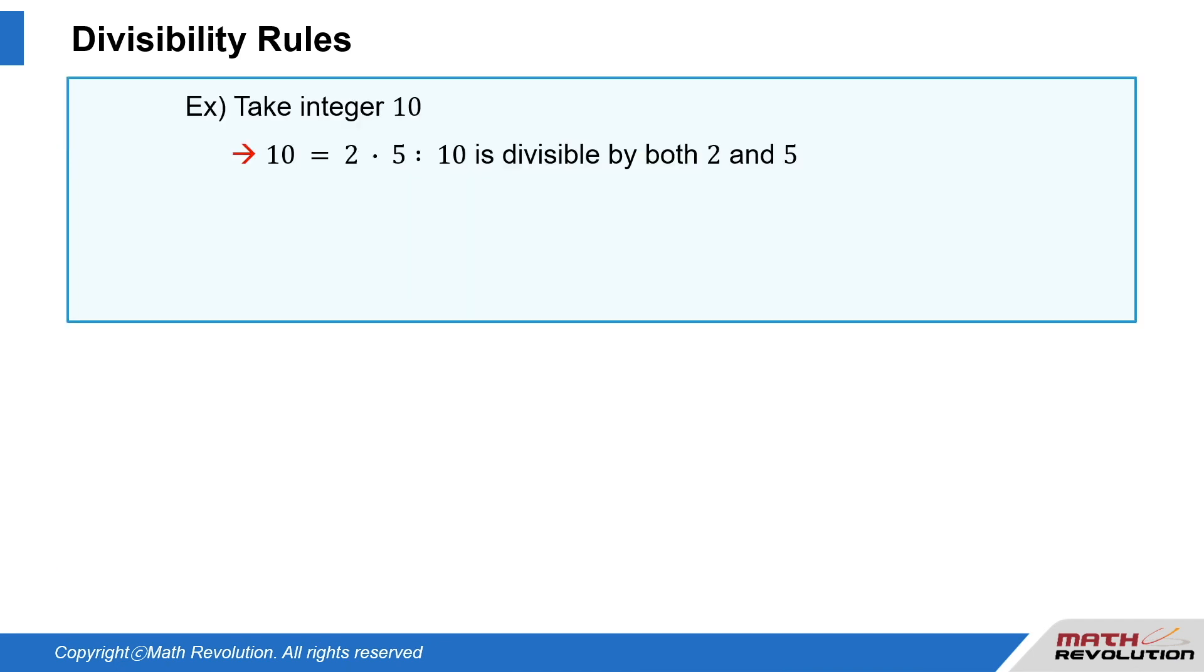For example, say we take integer 10, which can be written as 2 times 5. That is, 10 equals 2 times 5. Therefore, 10 is divisible by both 2 and 5.